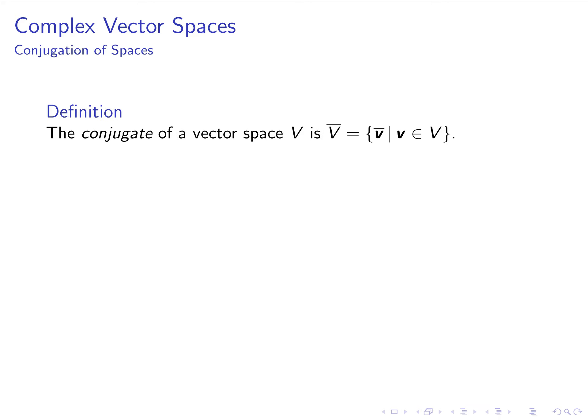So what does it mean to do linear algebra with complex vector spaces? One thing we can do now is conjugate a vector space. If we start with a vector space V, we can take its conjugate — notated by writing a bar on top — and what this signifies is that we conjugate every single vector inside the original vector space.